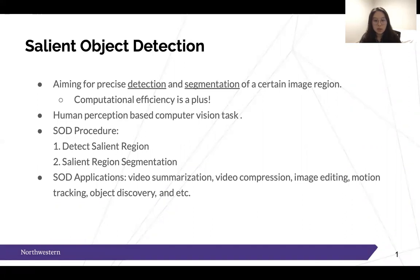The salient object detection process works as follows: it firstly detects the salient image region, and after that it segments the selected or detected region. Applications of salient object detection include video summarization, video compression, image editing, motion tracking, object discovery, and so on.